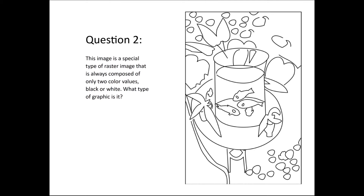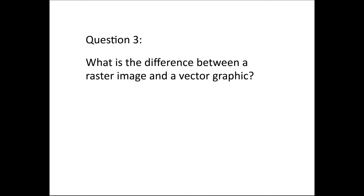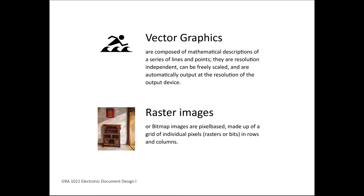Most line art you'll see online — even those available in free libraries that look like vector images — are actually raster because they're made up of pixels. Vector graphics are composed of mathematical descriptions, lines, and points; they are not dependent on resolution, so they can be freely scaled. If you want to use a vector on a website, you can only use an SVG or scalable vector graphic. So you would have to convert, for example, your Illustrator file to an SVG file to make it compatible for web.